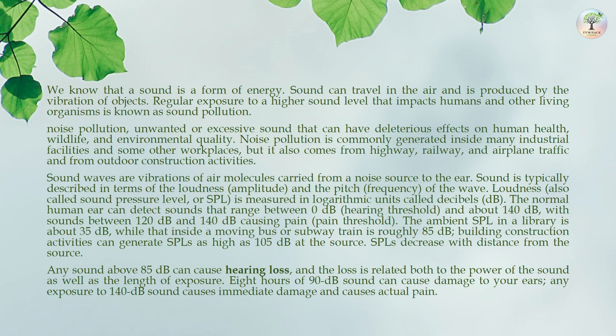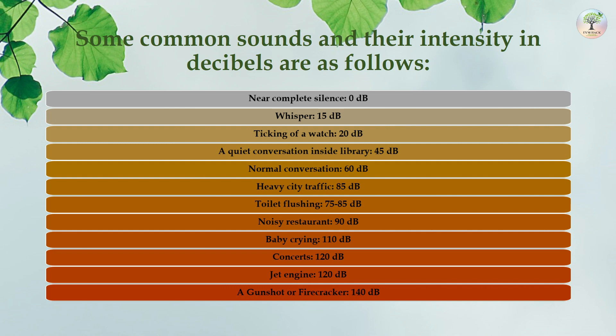The normal human ear can detect sounds that range between 0 decibel (hearing threshold) and about 140 decibels, with sounds between 120 and 140 decibels causing pain. The ambient SPL in a library is about 35 decibels, while inside a moving bus or subway train it is roughly 85 decibels. Building construction activities can generate SPLs as high as 105 decibels at the source. Any sound above 85 decibels can cause hearing loss, related both to the power of the sound and the length of exposure. Eight hours of 90 decibels sound can cause damage to your ears, and any exposure to 140 decibels causes immediate damage and pain.